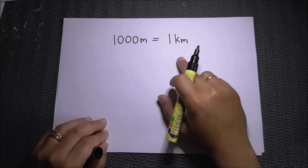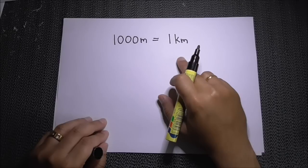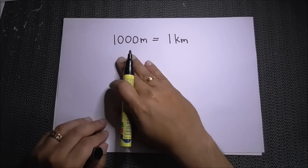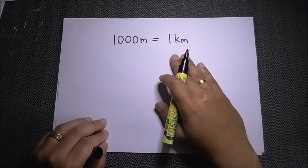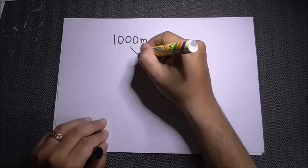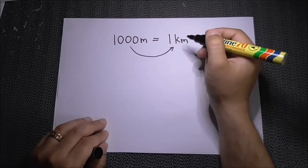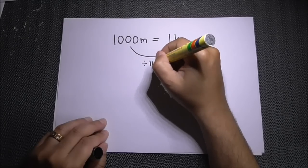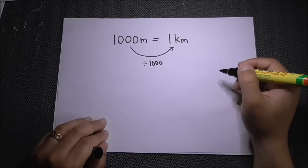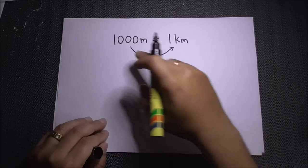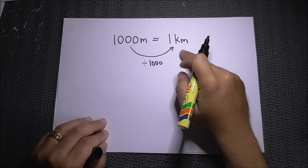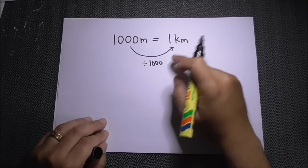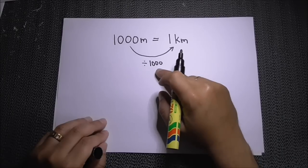Say for example you had a question where you had to convert meters to kilometers — it's very simple. When you convert one thousand meters to kilometers, you divide by one thousand. That's why it becomes one, because it's been divided by one thousand.